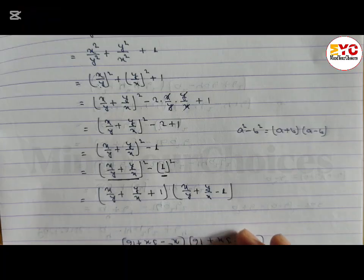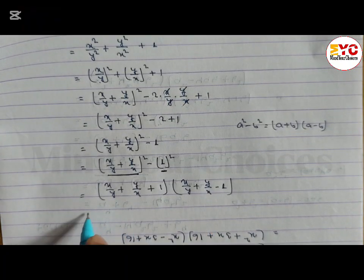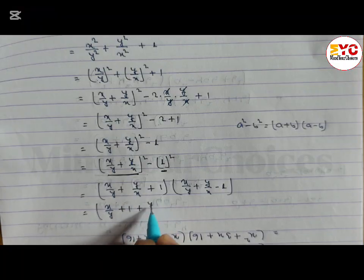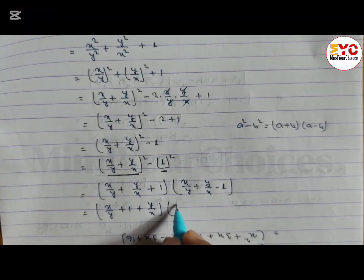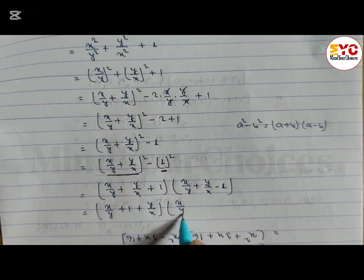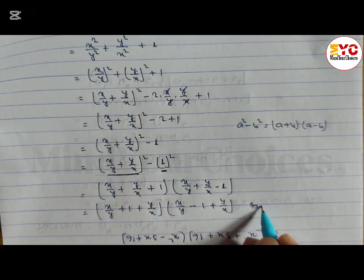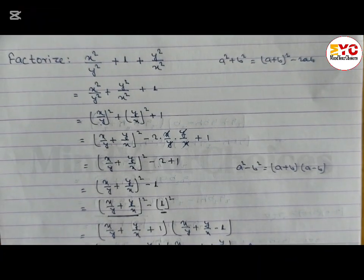You can arrange the terms or leave the answer as is. Arranging means writing x by y plus 1 in the middle: so x by y plus 1 plus y by x, times x by y minus 1 plus y by x. That is your final answer. Hope you understand how to factorize.